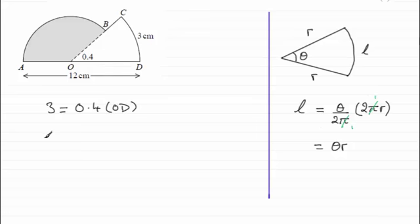And so rearranging that, we've got that OD equals 3 divided by 0.4. If you work that out in your calculator, you'll find that you get 7.5, so 7.5 units will be centimetres.